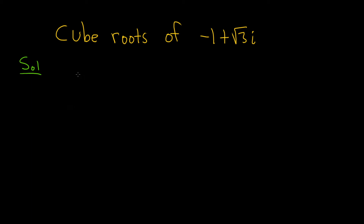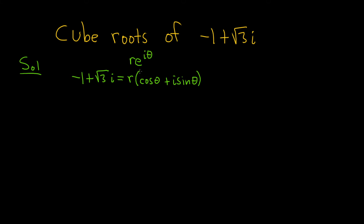We'll start by writing it in trig form. The way I like to do that is I take my complex number and set it equal to what it means to be in trig form or polar form. It's r times parentheses cosine theta plus i sine theta. Here r is called the modulus and theta is called the argument. If you know some stuff about exponentials, this is the same thing as r e to the i theta, since e to the i theta equals this expression.